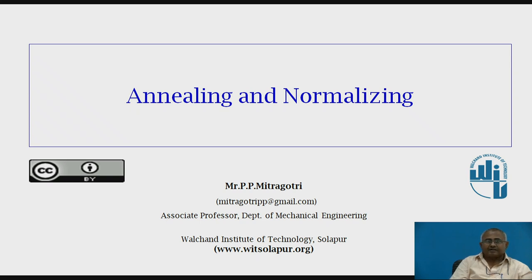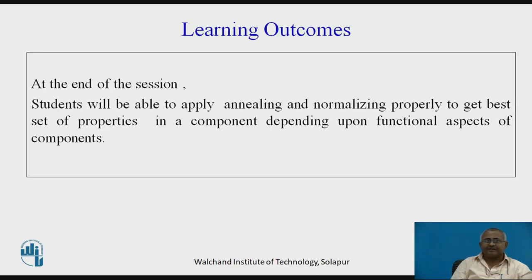The learning outcome of this topic will be that students shall be able to apply annealing and normalizing properly to get the best set of properties in a component depending upon the functional aspect of the component. Students will be able to understand where to apply annealing and where to apply normalizing depending upon the functional need of the component.